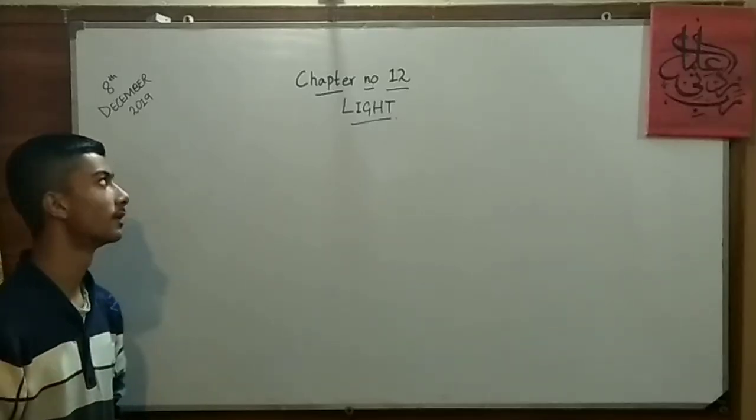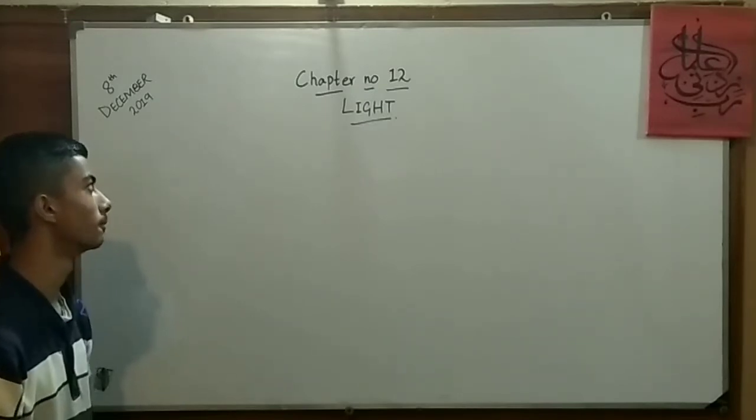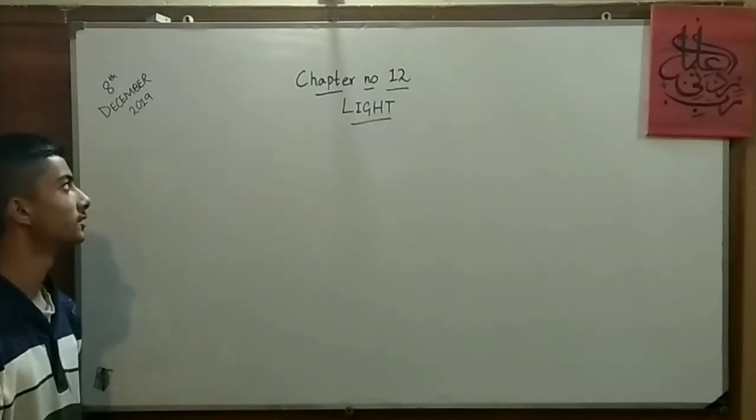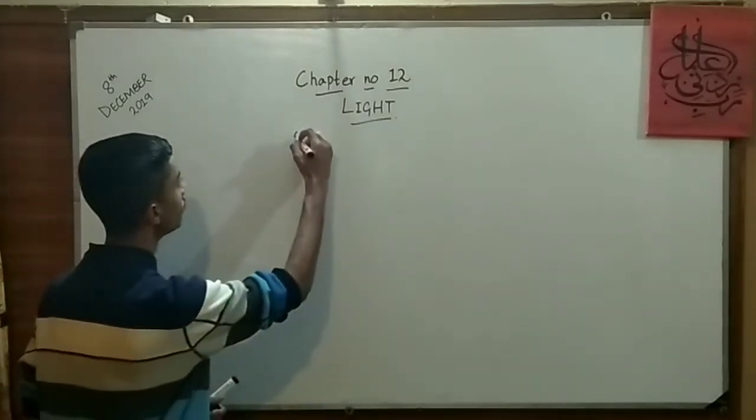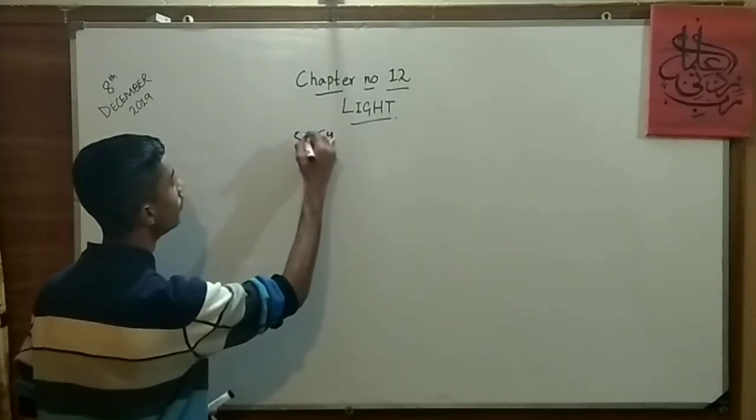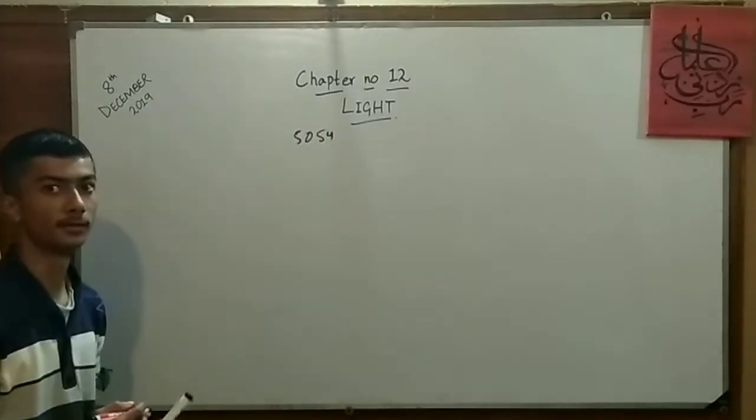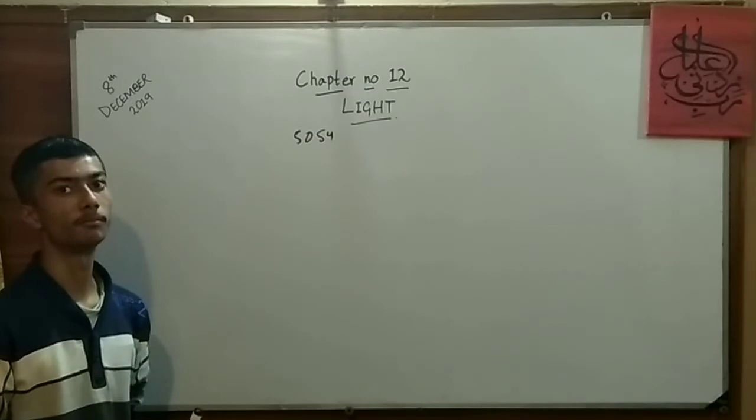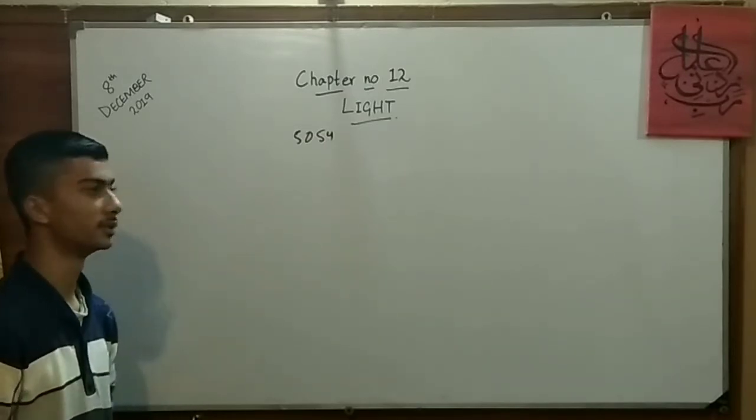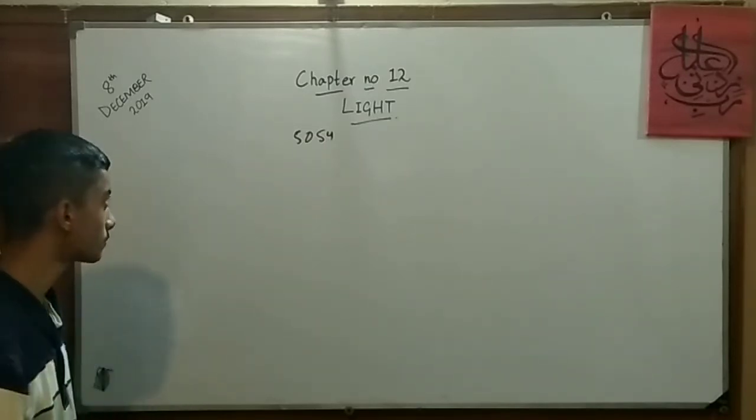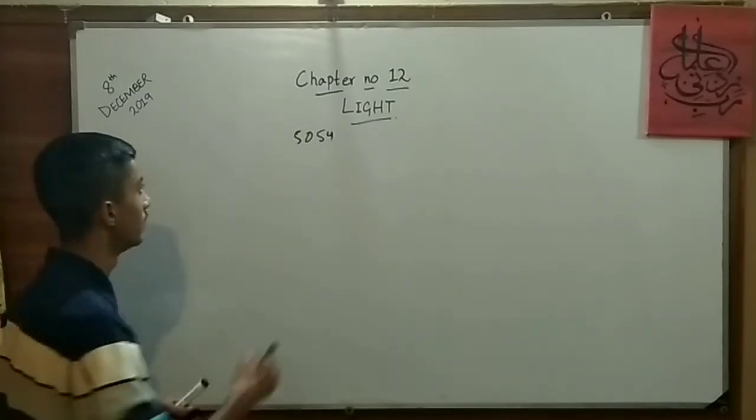Hello everyone, today we are going to cover our physics O-level topic. As you all know that physics code is 5054 and today we are going to cover the topic of light. Light usually comes in your P1, P2 as well as in P4.